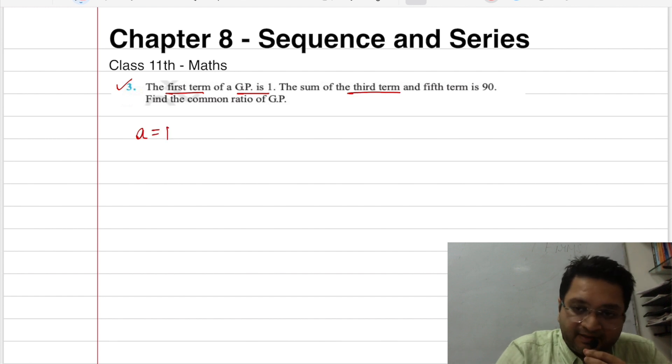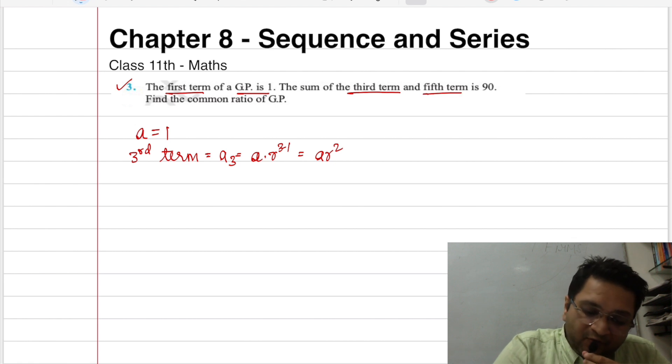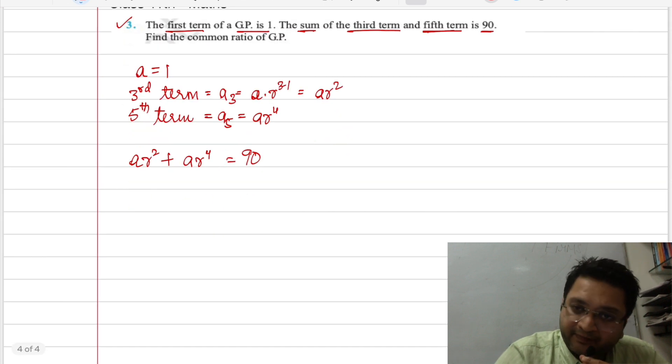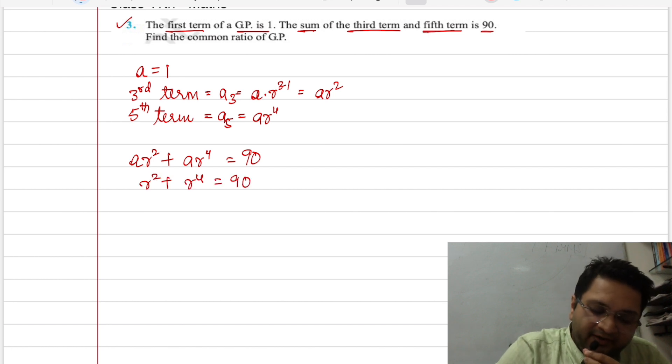We have told you that the third term means a3. We can note a3 as a into r to the power 3 minus 1, that means ar². And I have told you the fifth term. So the third term and fifth term is 90. So this means that I will calculate the fifth term. a5 which would be ar⁴. So I have ar² plus ar⁴ is equal to 90. I have already told you that a is 1. So I can write directly r² plus r⁴ is equal to 90.